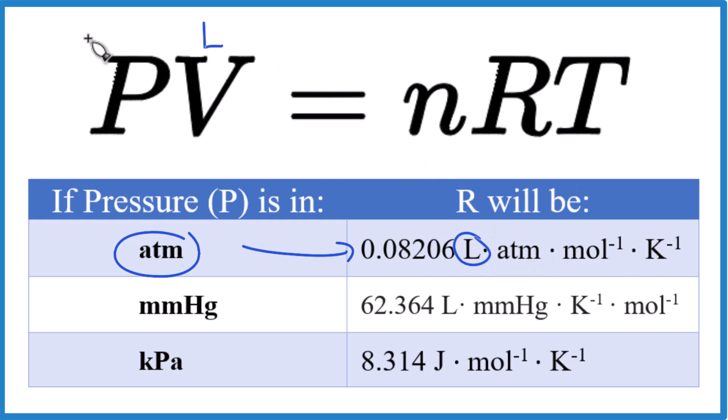We said our pressure here is in ATM, and you'll be given that in the problem usually. So you'll have a pressure. N, that's our moles. So N has to be in moles.